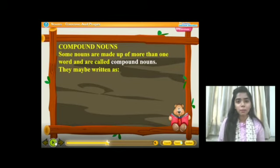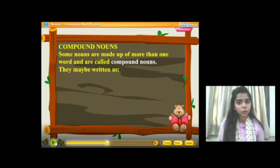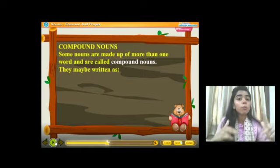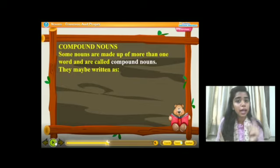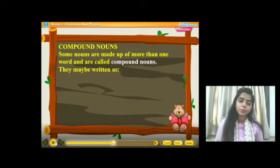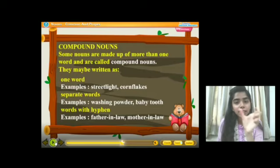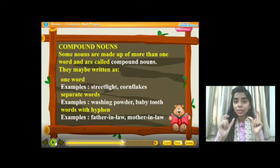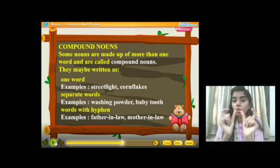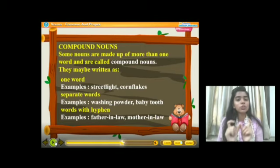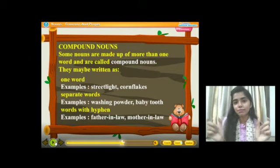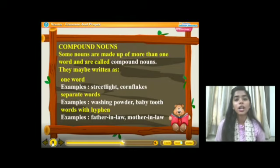Then, we are studying about compound nouns. Some nouns are made up of more than one word and are called compound nouns. There are certain nouns which are made up of more than one word. They may be written as one word — for example, 'streetlight'. Street and light: it is considered as one word but it is made up of two words. When we join two words together, what is forming? Compound noun. Cornflakes — corn and flakes. I am joining them together, then it is becoming a compound noun.